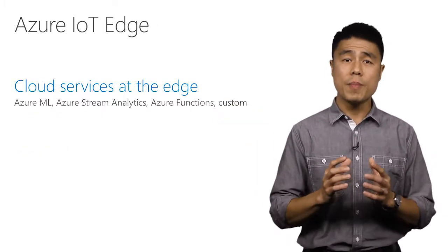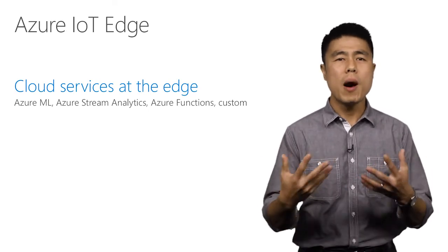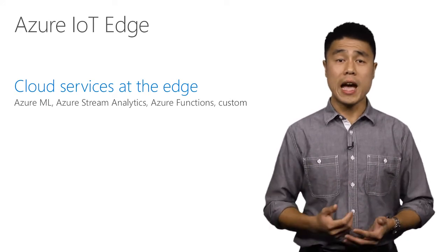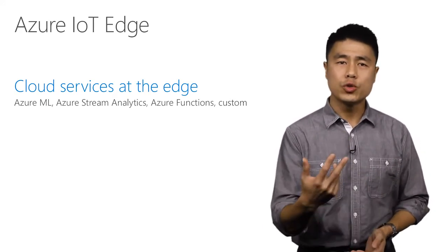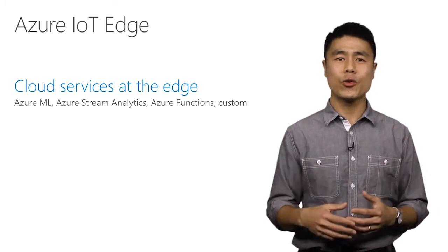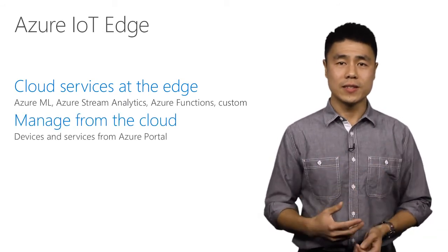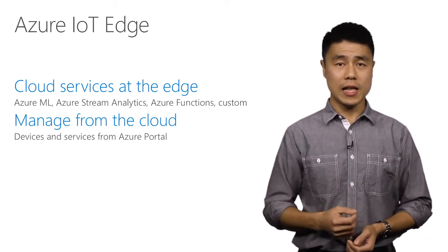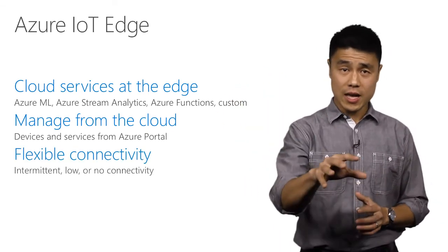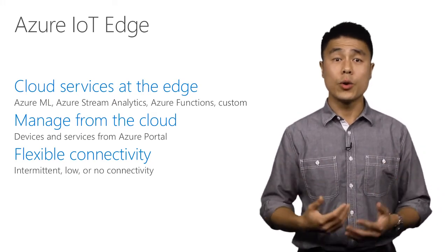Azure IoT Edge is all about enabling cloud services at the edge. For example, models built with Azure Machine Learning, near real-time analysis of streaming data with Azure Stream Analytics, event-driven execution of code with Azure Functions, or you can even create your own custom code and package that in a Docker container. All devices and services can be managed from the cloud using the Azure portal, and by bringing intelligence to the edge, you can run analytics in places where it's intermittent, low, or even no connectivity.